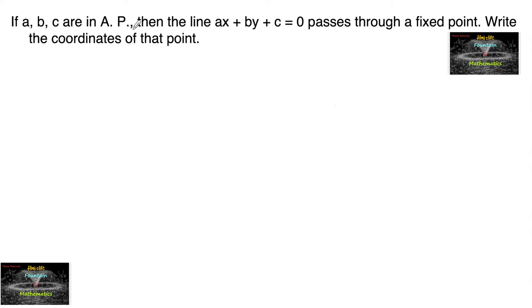If A, B, C are in AP arithmetic progression, then the line AX plus BY plus C equals 0 passes through a fixed point. Write the coordinates of that point.